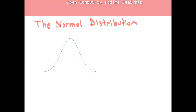Hi there! In the Chapter 2 Part 1 video, we briefly talked about probability distributions for continuous random variables. In this video, we are going to review specifically the normal distribution and the standard normal distribution for continuous random variables, including how to do certain probability calculations necessary for future chapters.